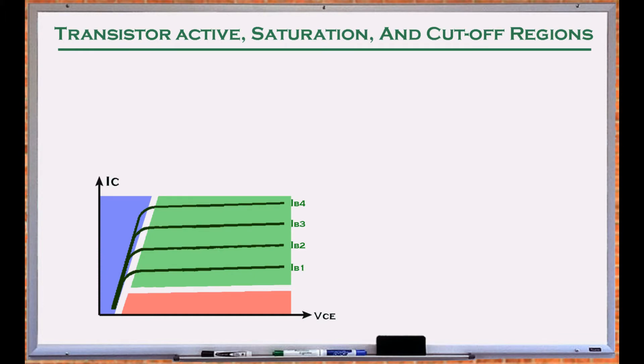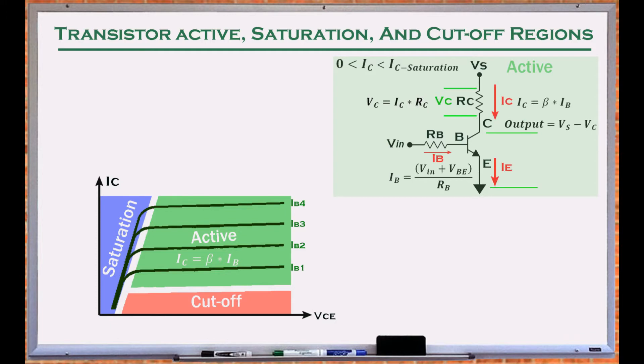Transistors operate in three distinct regions: active, saturation, and cut-off. In the active region, the collector current equals the base current multiplied by beta, the current gain of the transistor. Beta can range from 20 to several hundred. In this region, the collector voltage of an NPN transistor is bigger than the voltage at its base, and the emitter current is the summation of the collector and base currents.